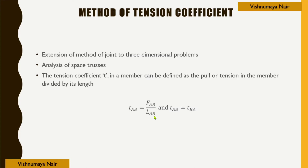We know that fab is equal to fba, so tab will be equal to tba.